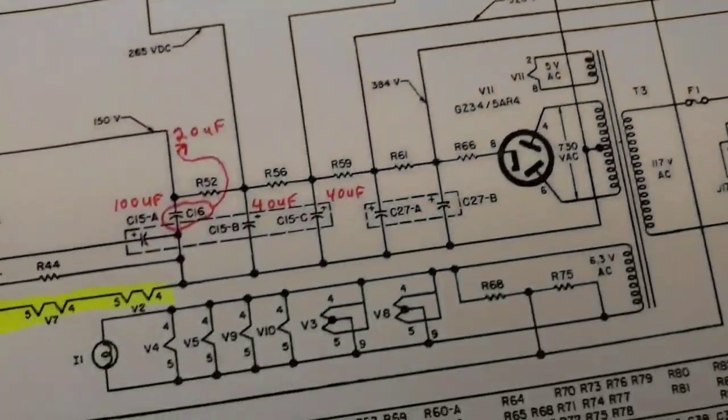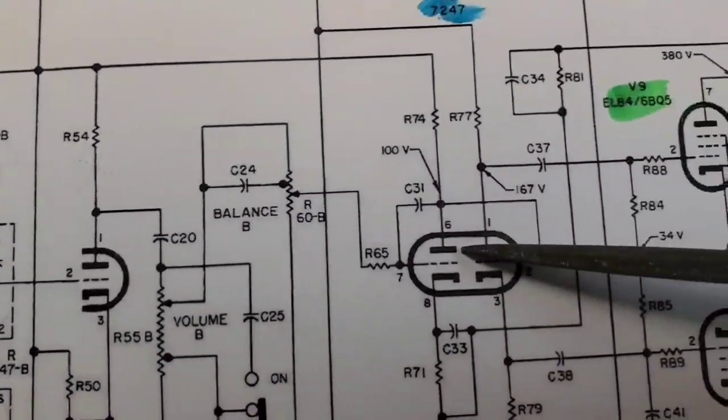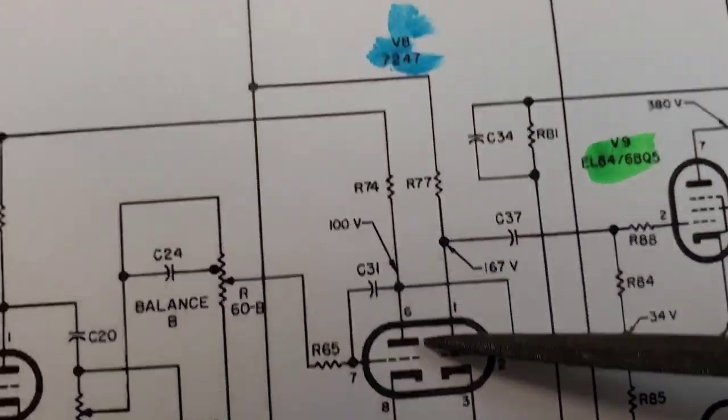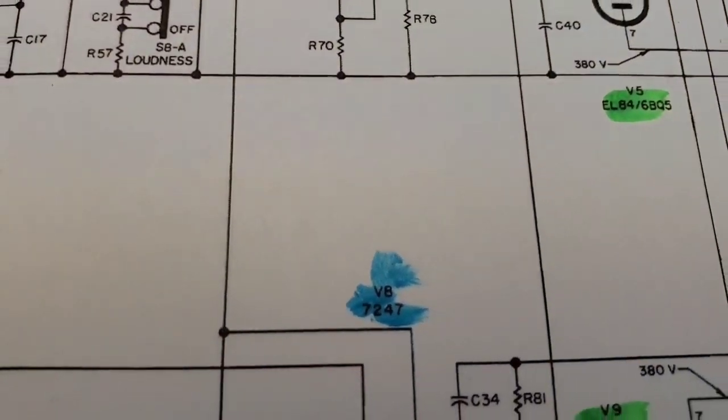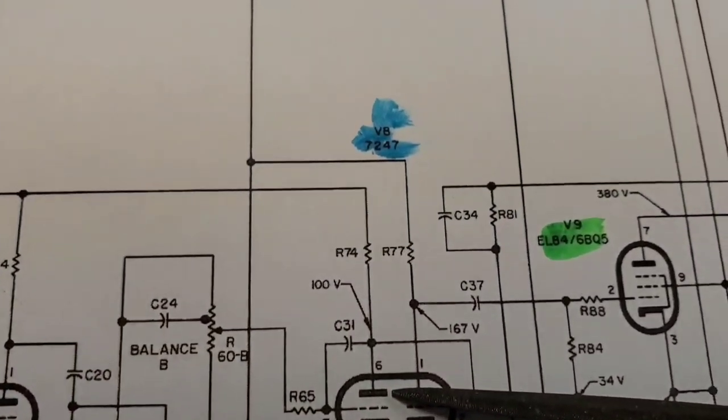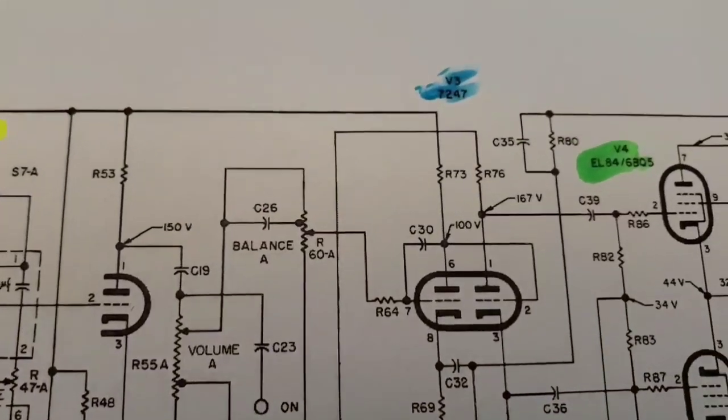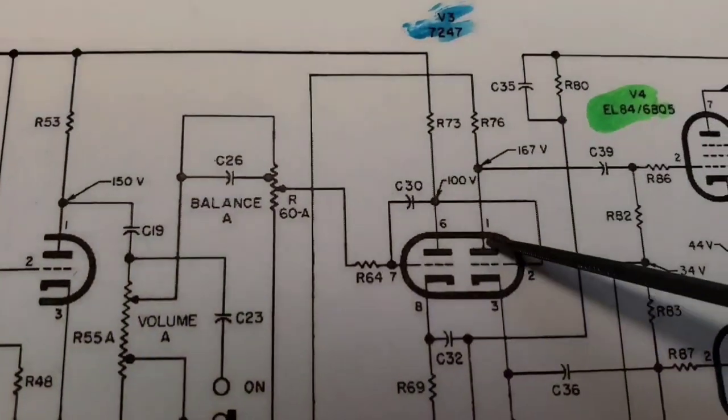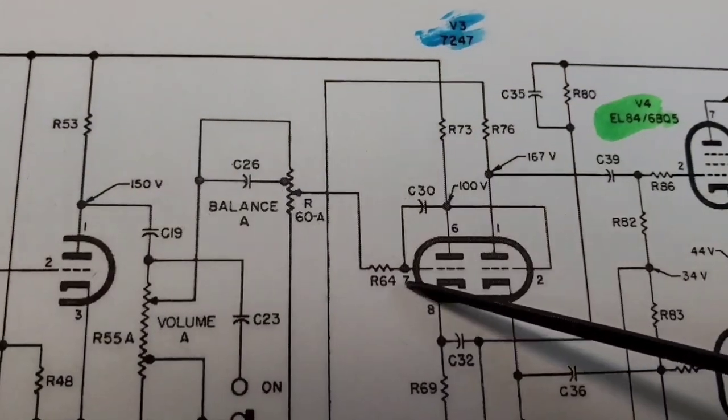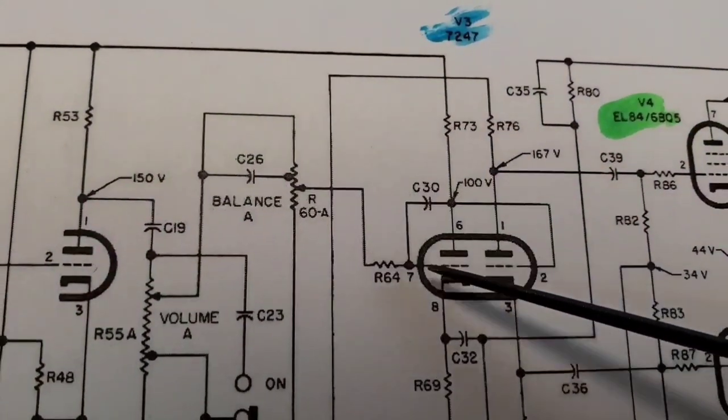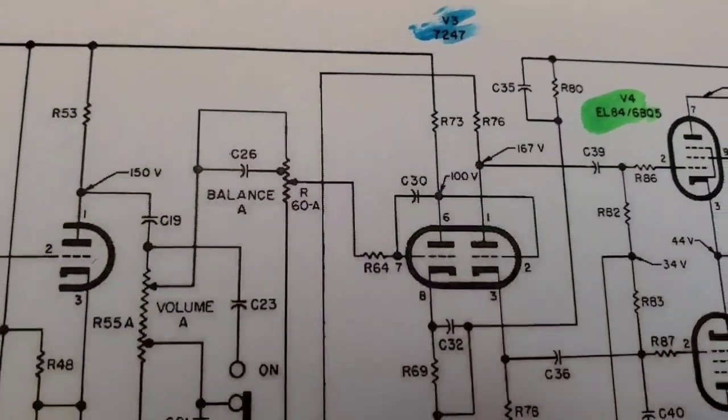And these are your V3 and V8. Those are your driver tubes. They get away with AC filaments on those too. So that's this one. This one right here, which is a 7247. And there's the other one, up there. This one right here. It's like a 12X7, two tubes in one.